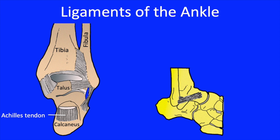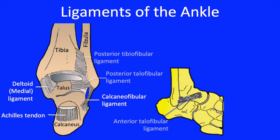As described previously, the ankle is similar to a mortise and tenon type of joint kept together by muscles and strong ligaments between the bones. There are numerous ligaments within the bones of the ankle. Frequently injured ones include the deltoid ligament (also called the medial ligament), the calcaneofibular ligament, the posterior tibiofibular and posterior talofibular ligaments, and on the lateral side, the anterior talofibular ligament. The naming of these ligaments is straightforward and descriptive of the bones being connected.